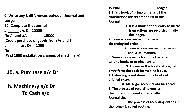Complete the journal entries. For credit purchase of goods from Anand: Purchase account debit to Anand account credit. For payment of installation charges of 1,000 to machinery: Machinery account debit to cash account credit.